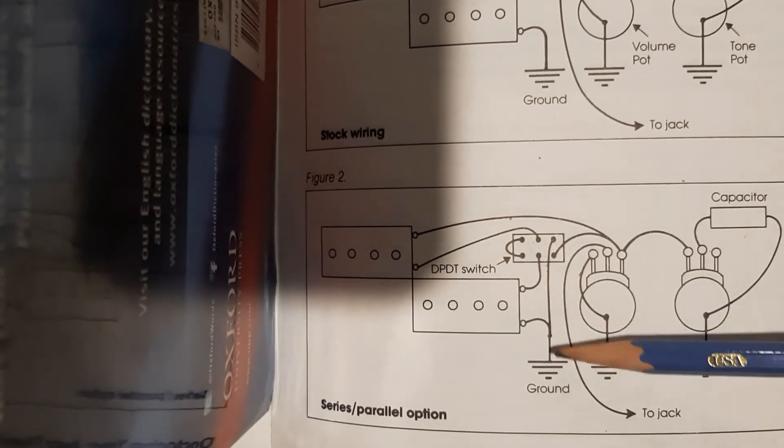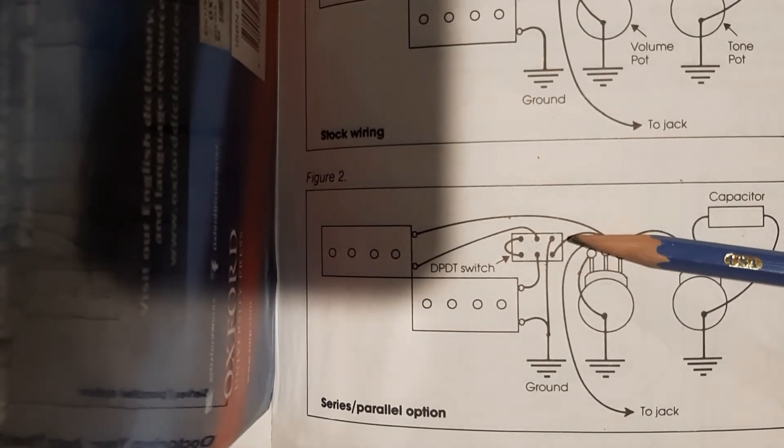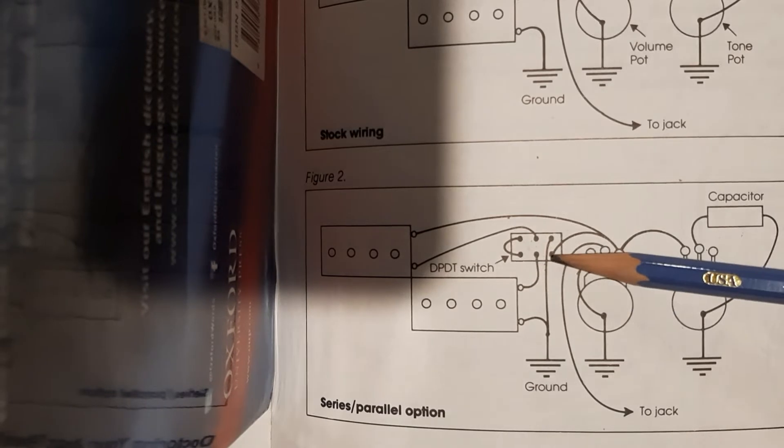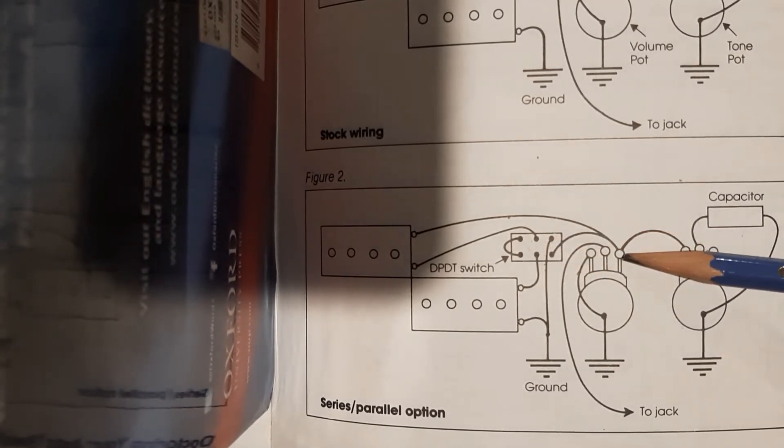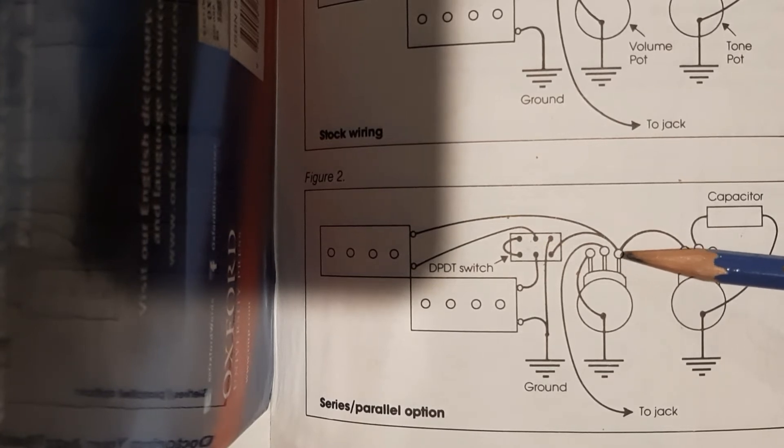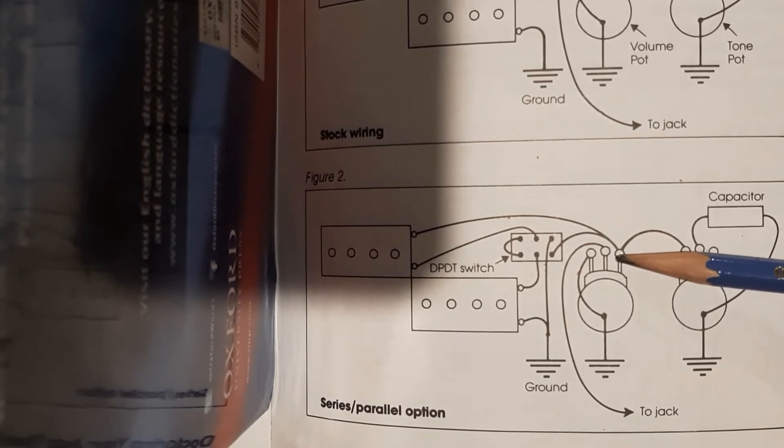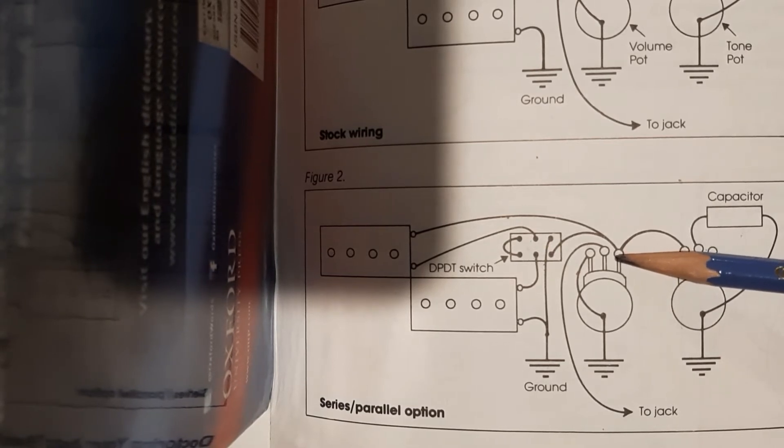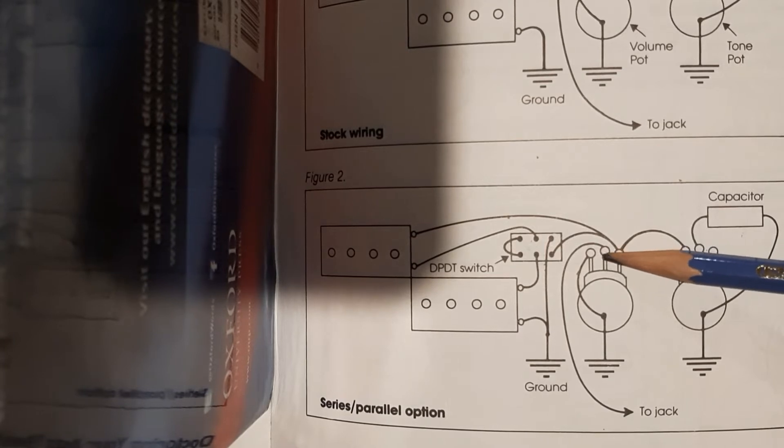From there we have the output of the pickups in our series parallel switch go to the volume knob. What a volume knob does is in one position there is almost zero resistance between these two lugs.